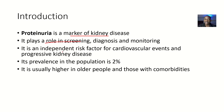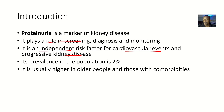Proteinuria is a marker of kidney disease. It plays a role in screening, diagnosing, and monitoring for kidney disease — if there's a kidney disease, there's proteinuria, so as you are treating you monitor to see how the disease is resolving. It is an independent risk factor for cardiovascular events and progressive kidney disease. Its prevalence is about two percent of the world's population. It is usually higher in older people, so age is actually a risk factor for proteinuria.